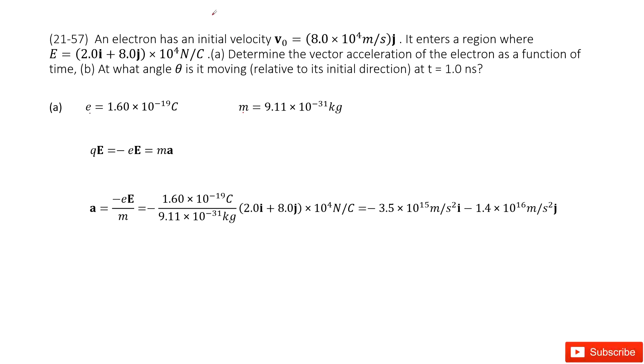And it tells us this electron has the initial velocity v0. Please pay attention, this v0 is in vector format in the y component.